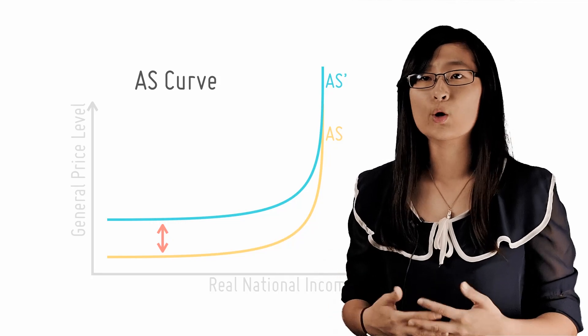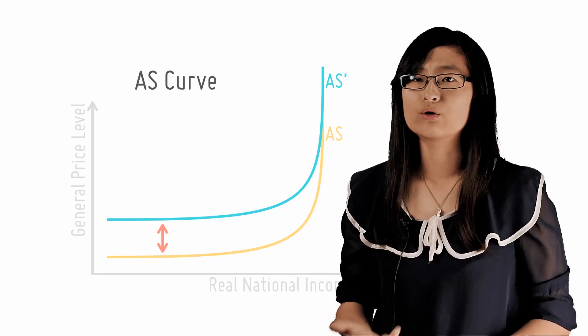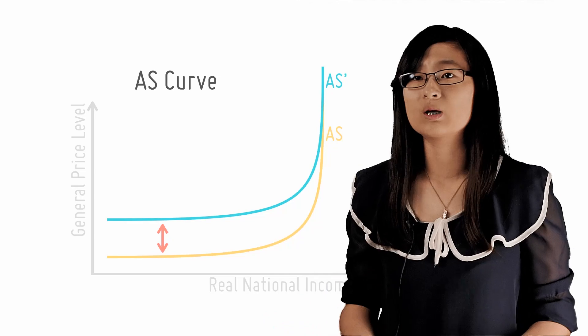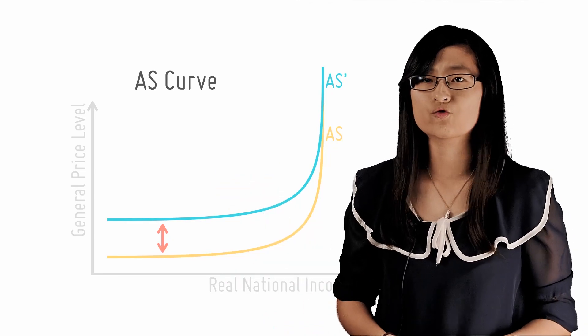So if raw materials like oil become more expensive and unions negotiate for higher wages or governments reduce production subsidies, the AS curve will shift upwards as shown and the converse is also true.